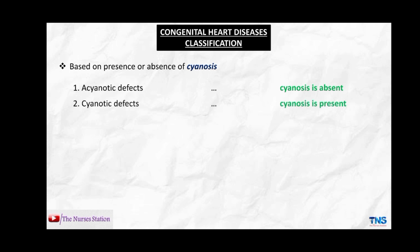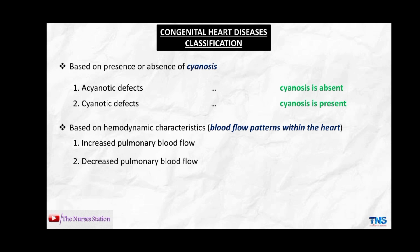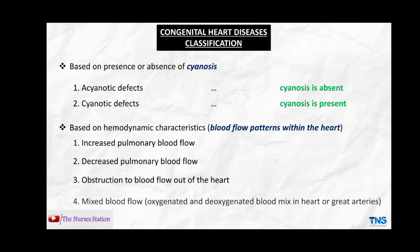The second classification is based on hemodynamic characteristics, that is blood flow patterns within the heart. These include increased pulmonary blood flow, decreased pulmonary blood flow, obstruction to blood flow out of the heart, and mixed blood flow — where oxygenated and deoxygenated blood mix in the heart or great arteries.